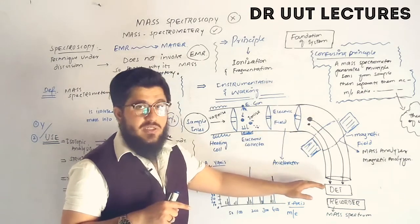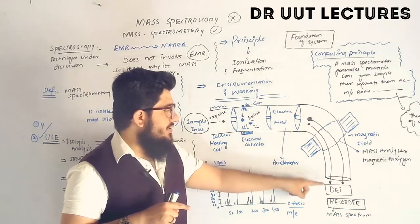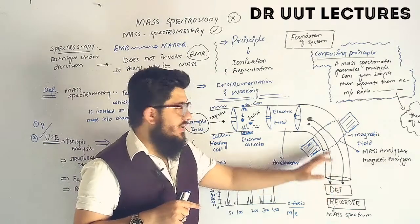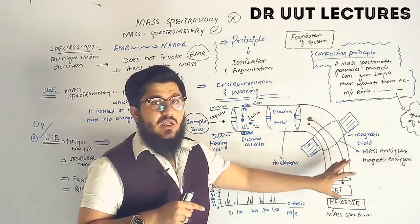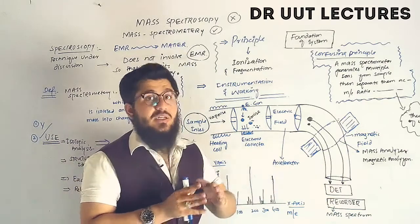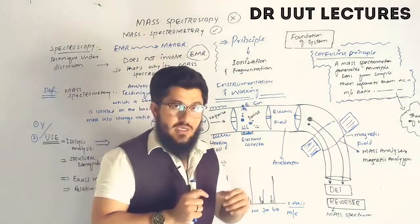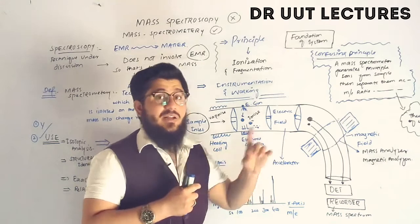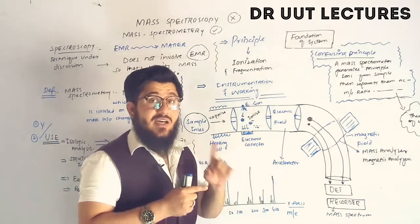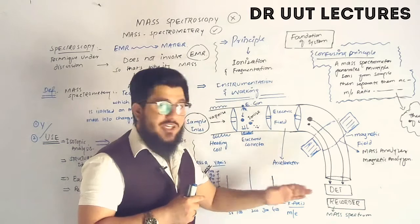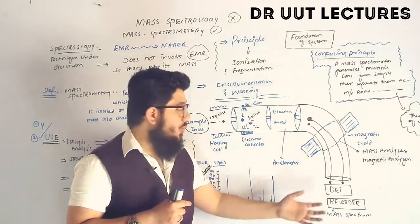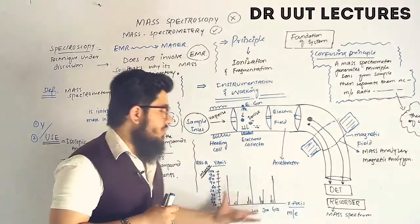The detector detects ions of low mass at the beginning point and ions of higher mass a little farther along. This way, the analyzer separates ions of different masses and the detector detects each one. After detection, the recorder records this data and produces a spectrum.